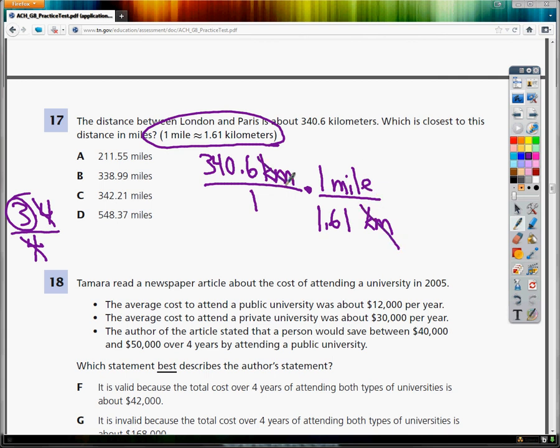Now these kilometers are on the top and the bottom so I cancel them, and I get 340.6 times one which would give me 340.6, and I'm going to divide that by the 1.61 that's left on the bottom.